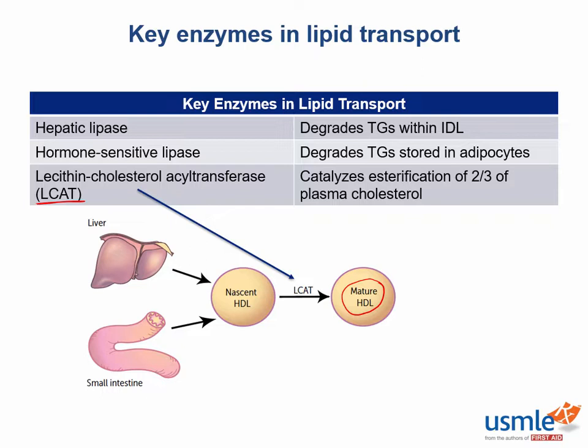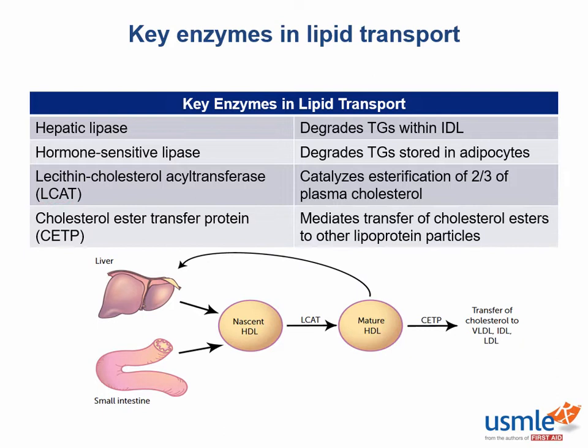The loaded-up HDL can take two paths: it can either go back to the liver, effectively reducing the amount of cholesterol systemically, or it can transfer cholesterol esters to other lipoproteins with the help of cholesterol ester transfer protein, or CETP. HDL, with the help of CETP, can transfer cholesterol esters to other lipoproteins such as VLDL, IDL, and LDL.